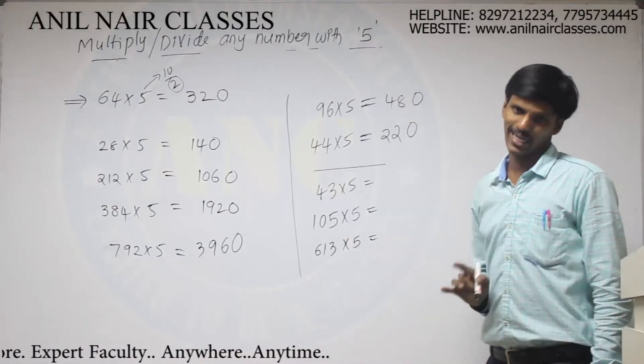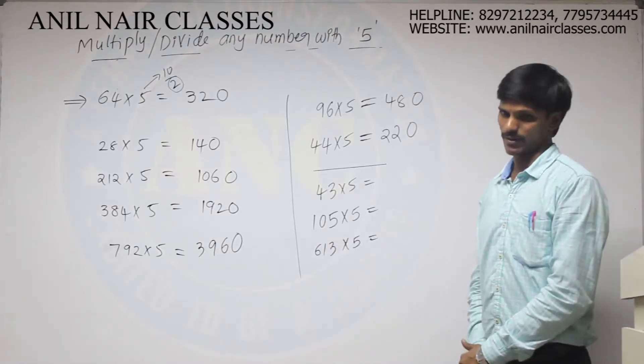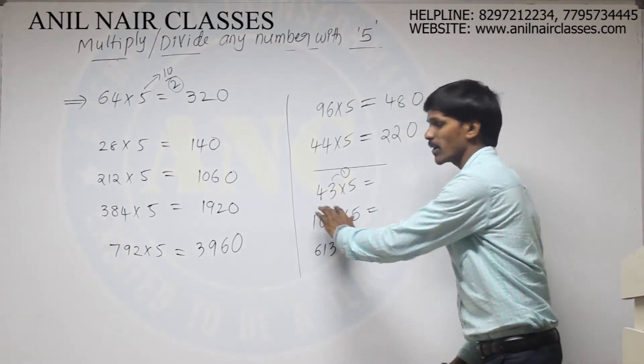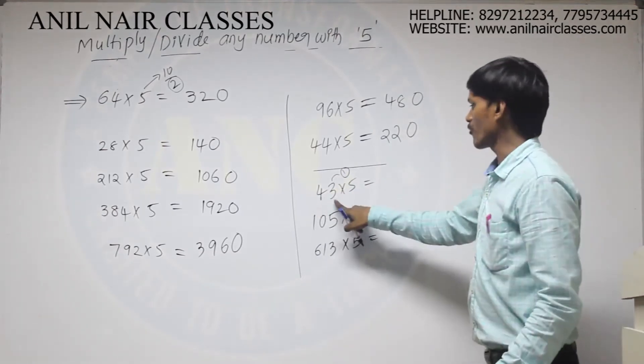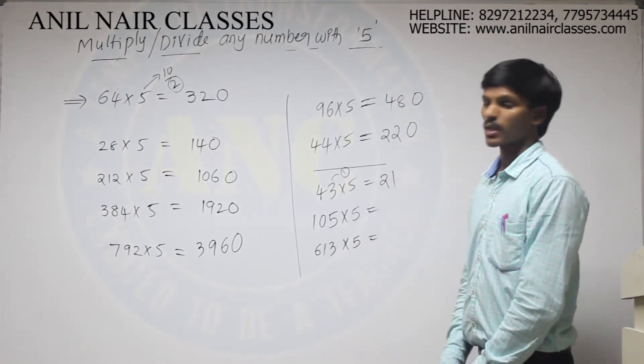if any number which is not perfectly divisible by 2, the remainder will be 1 always. 43, if I am dividing with 2, the remainder will be 1 always. So simply, remove that remainder.